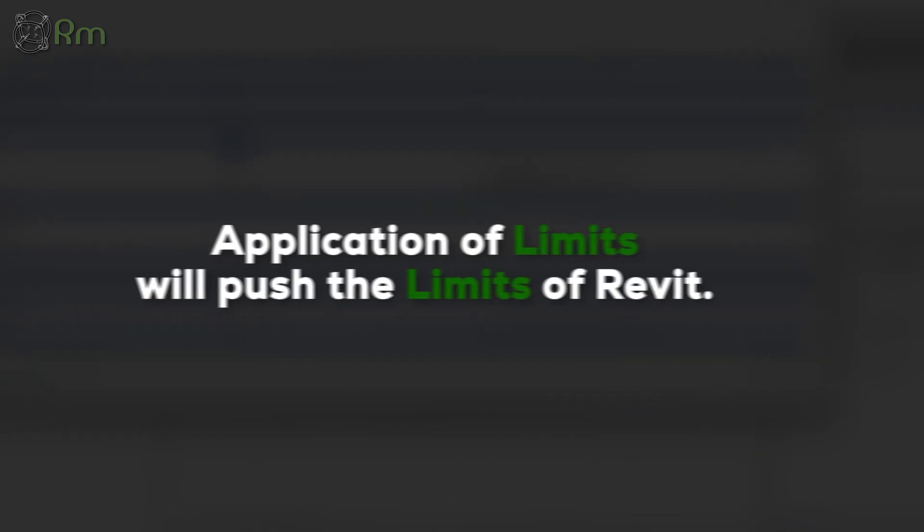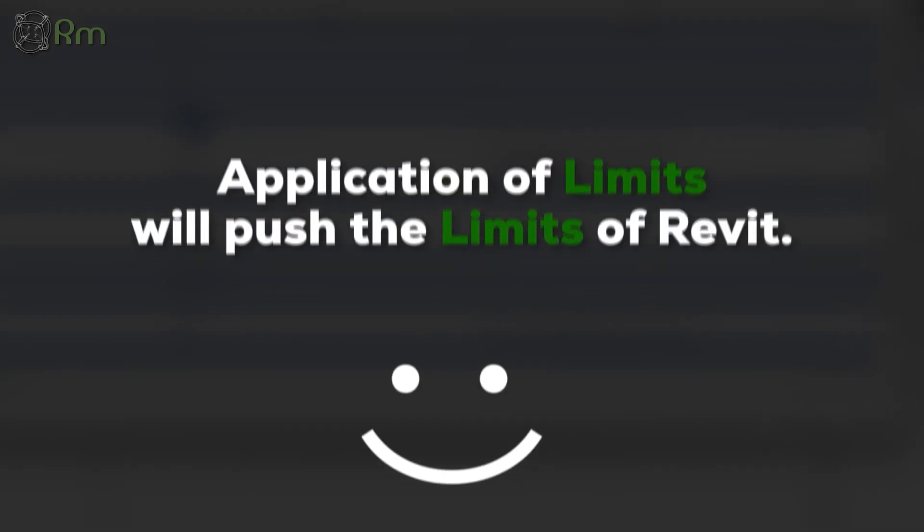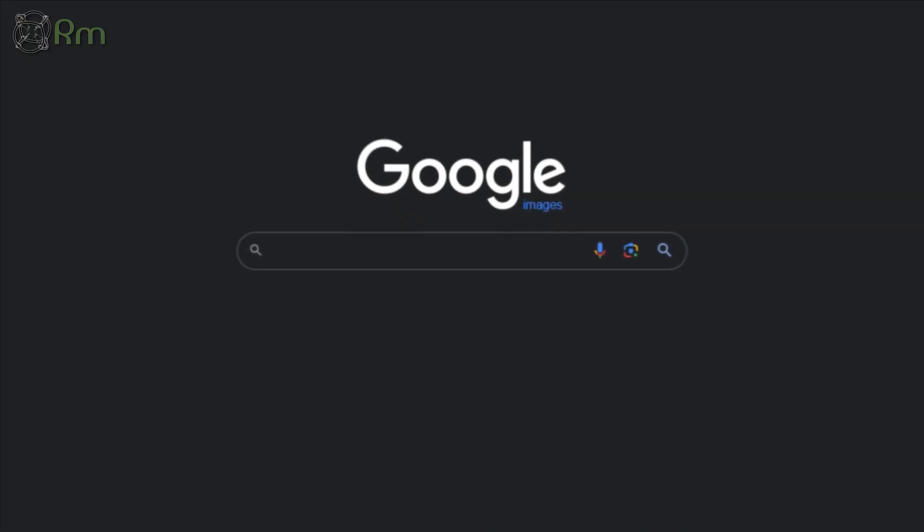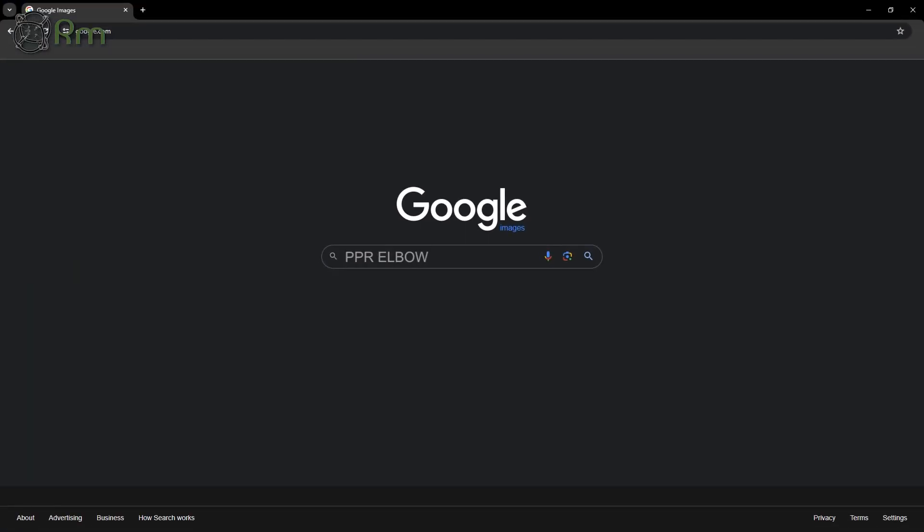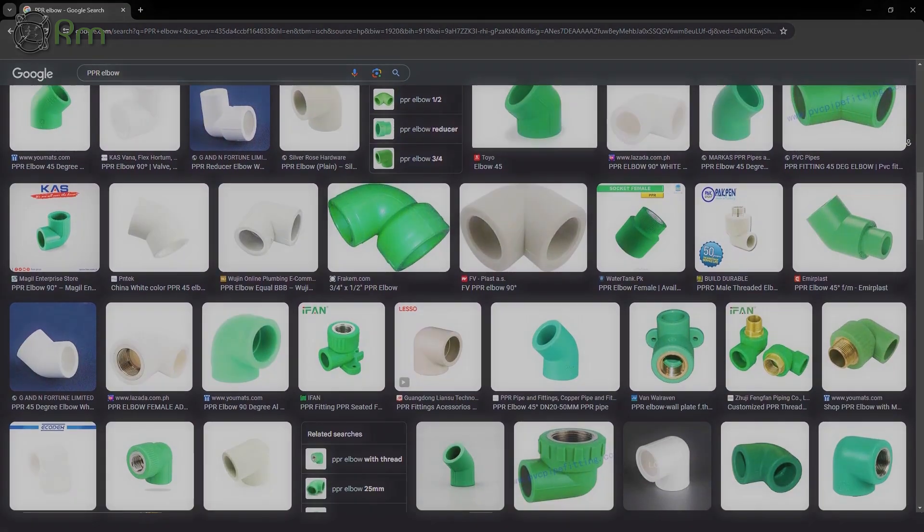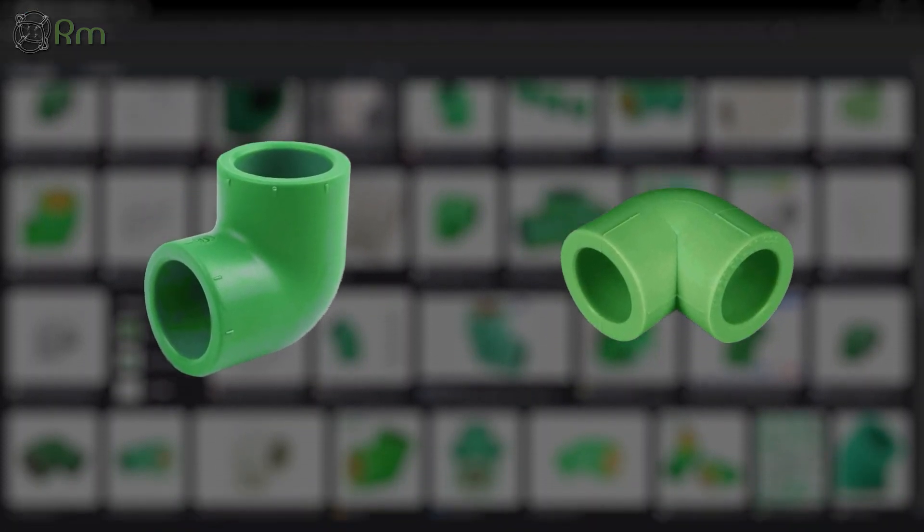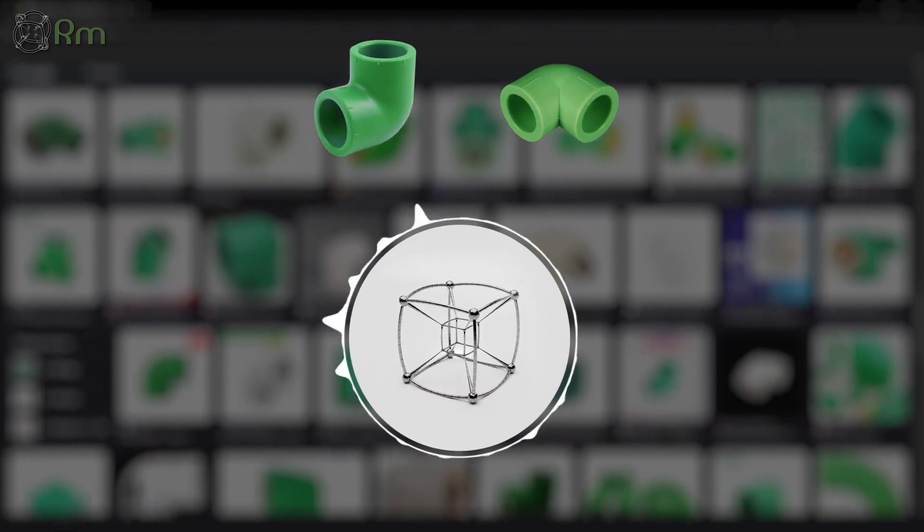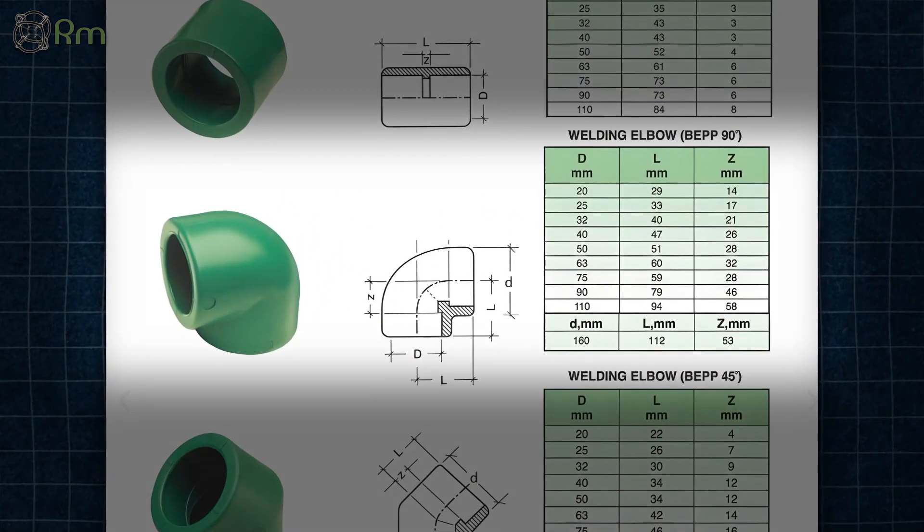You are going to see how application of limits is going to push the limits of Revit. If we search on Google PPR elbow, you're going to see lots of PPR elbow fittings. They come in different shapes. Some elbows look like this, whereas others look like this. The one which we are going to talk about in this video is this one.